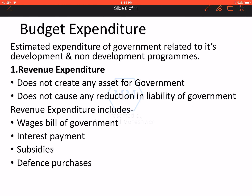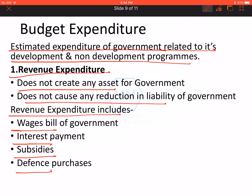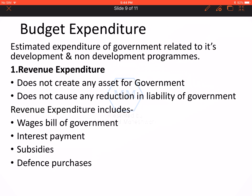The next thing is budgetary expenditure. All estimated expenditures of the government related to their development or non-development programs are called budget expenditures. Budget expenditures are of two types: revenue expenditure and capital expenditure. Revenue expenditures are all expenses which do not create assets and do not reduce any liability. These include the bill of wages, interest payments, subsidies, and defense — all part of revenue expenditure.